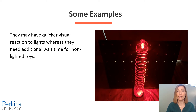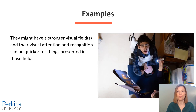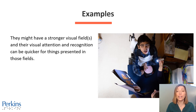On this slide, we have a photo of a lit-up red slinky hung on a black slant board with holes. Some individuals might have a stronger visual field or fields, and their visual attention and recognition can be quicker for things presented in those fields, while they can demonstrate longer response intervals in the other fields.